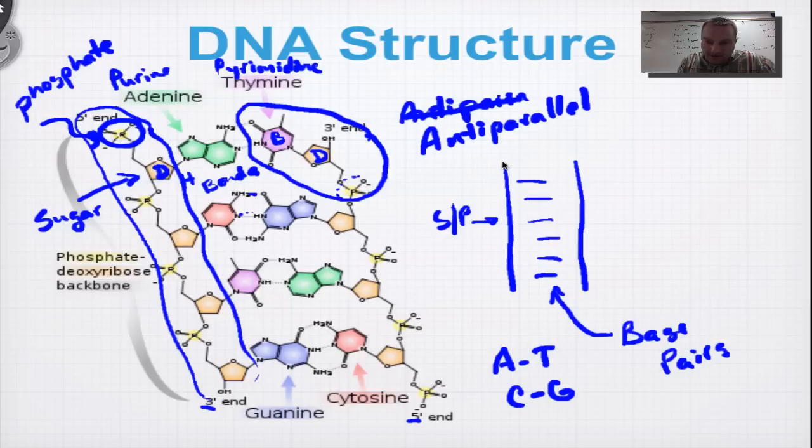And what that means is, if it's five prime on this side, it's three prime over here. If it's five prime at that end, the opposite end is three prime. If it's three prime there, it's going to be five prime. When we learn about replication, we're going to learn that a certain enzyme goes from a five prime to a three prime direction. And so, basically what's happening is, one strand goes this way, another strand goes that way, anti-parallel.